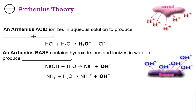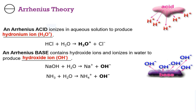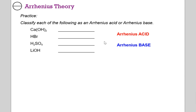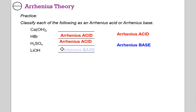The Arrhenius theory: an Arrhenius acid ionizes in aqueous solution to produce a hydronium ion or hydrogen ion. An Arrhenius base contains hydroxide ion and ionizes in water to produce hydroxide ion. You have reactions there to support that idea. This is the original theory by Svante Arrhenius. So we can look at substances and decide if they would be an Arrhenius acid or base — acids contain hydrogen ions and bases contain hydroxide.